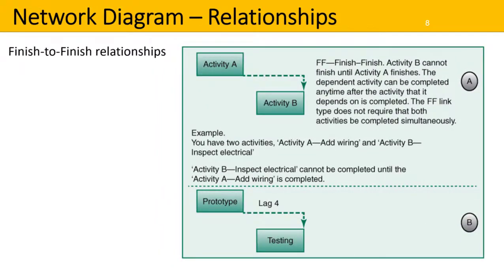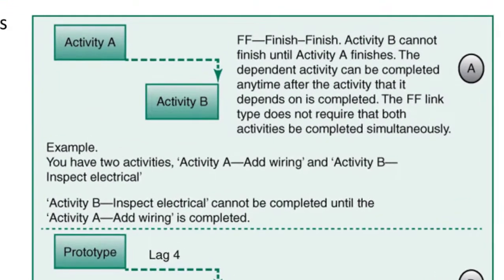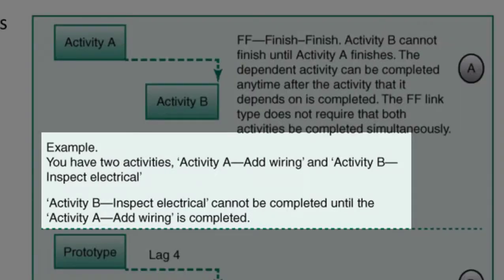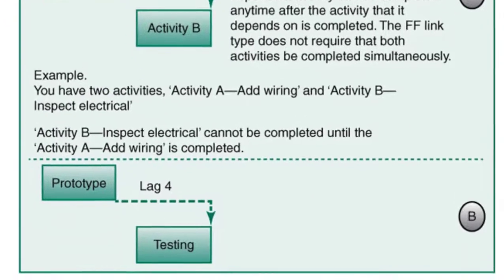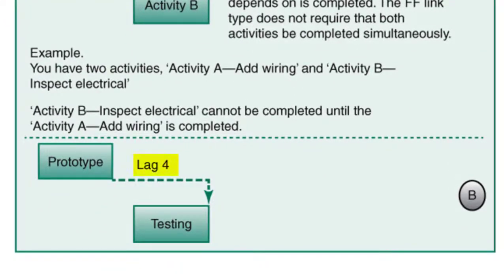Finish-to-finish relationships: at the top A, activity B cannot finish until activity A finishes. The dependent activity must be completed any time after the activity that it depends on is completed. The finish-to-finish link type does not require that both activities be completed simultaneously. For example, activity A is add wiring and activity B is inspect electrical — activity B cannot be completed until activity A is completed. For B, we have a lag of four days between prototype and testing in a finish-to-finish relationship.